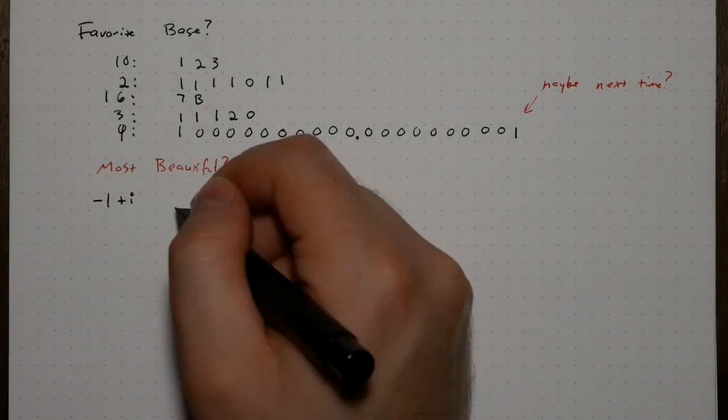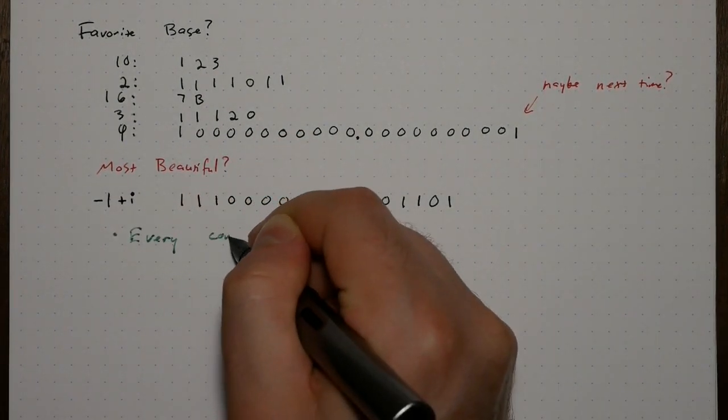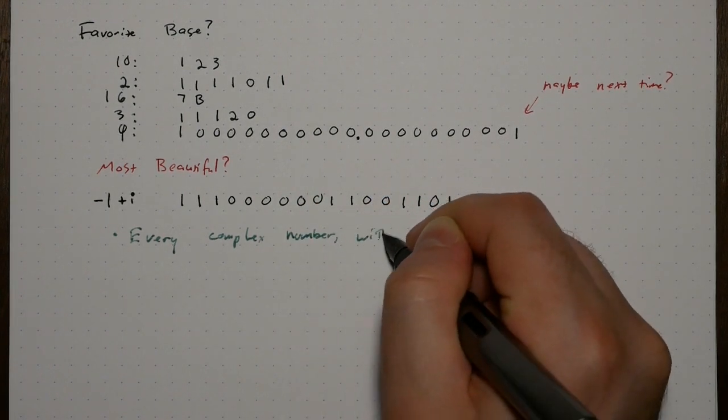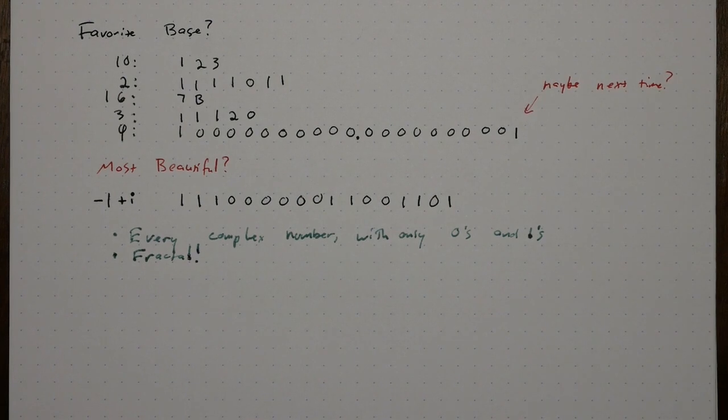I think it's base negative 1 plus i. This base lets you represent every complex number using only zeros and ones. Its beauty comes from a fractal that appears when you start to study it.